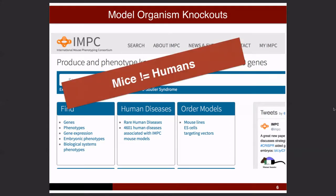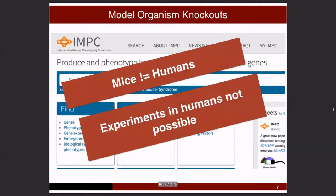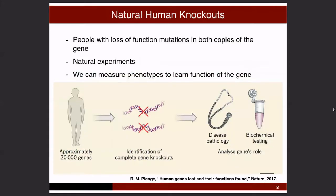Of course, mice are not human, and experiments in humans are not possible. So there are what we call natural human knockouts — people with loss-of-function mutations in both copies of a gene. These are natural experiments. These are people living out in the wild, mostly happy, and it's a matter of identifying them, measuring their phenotype, and trying to understand what's the consequence of losing that gene.